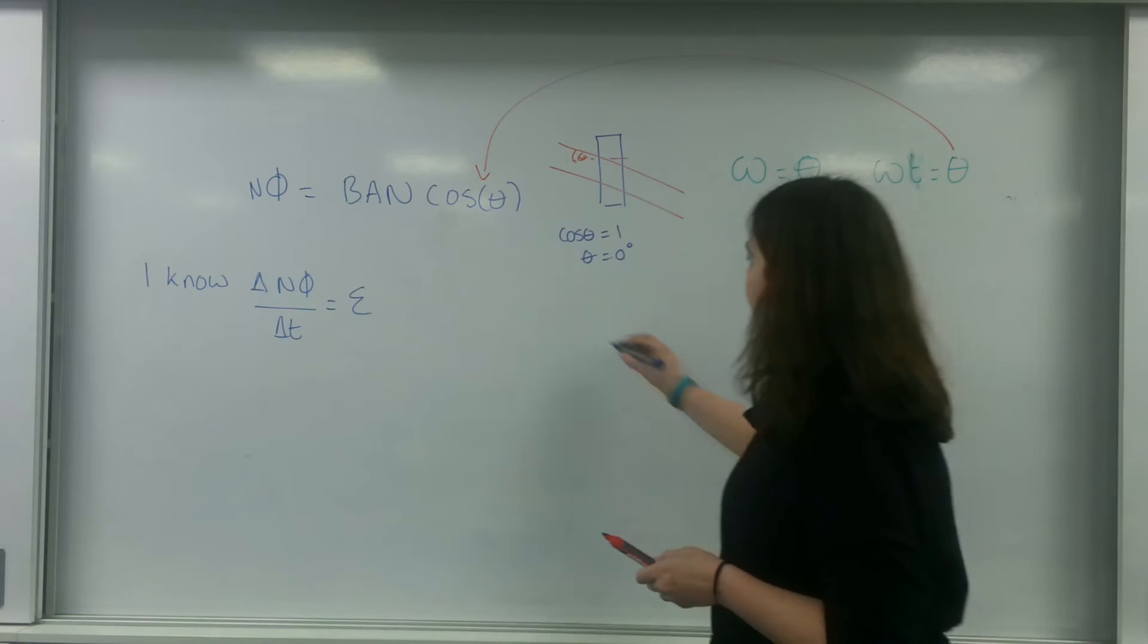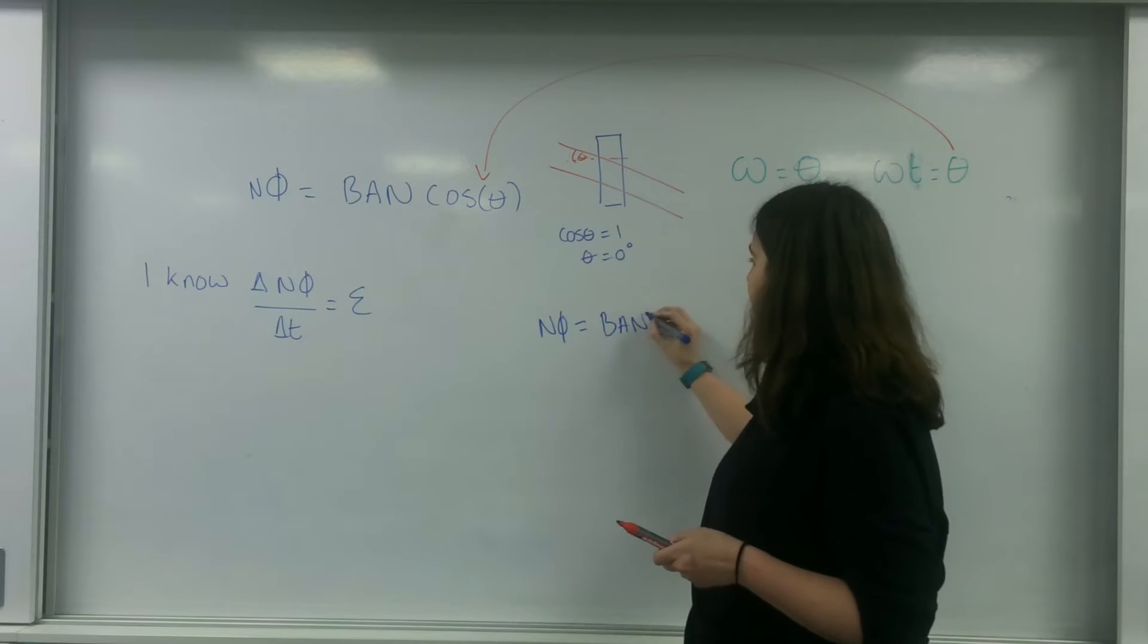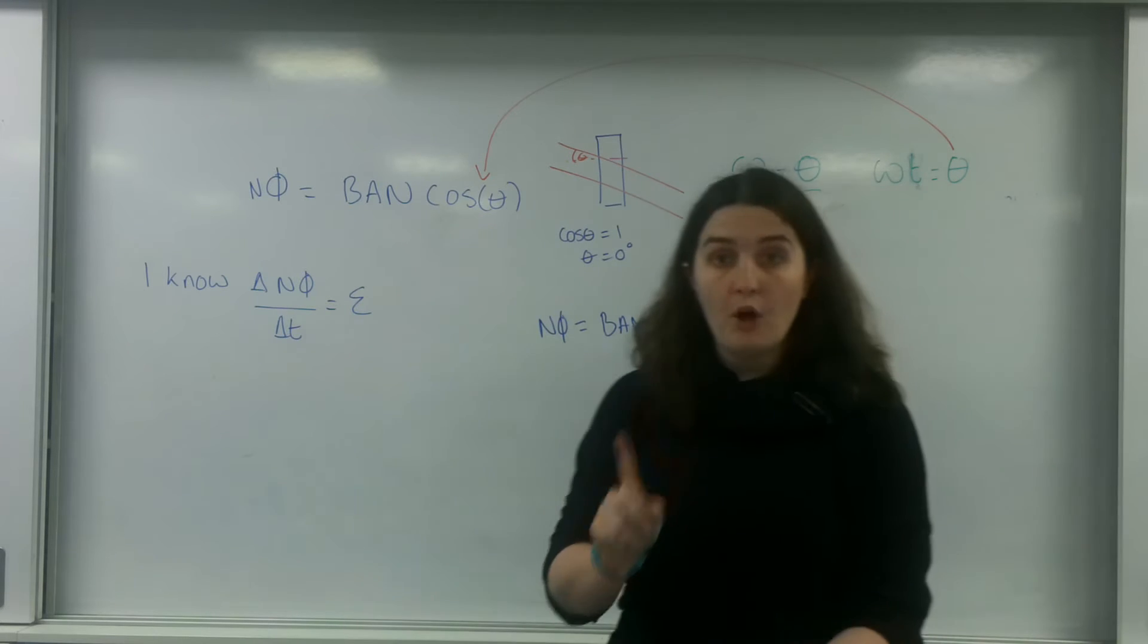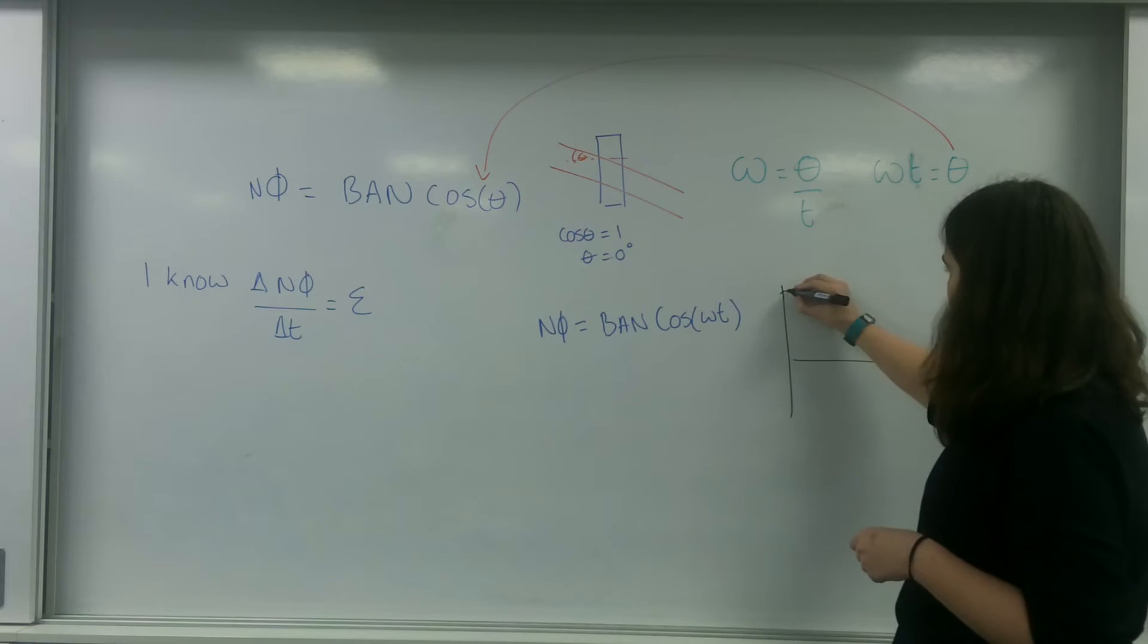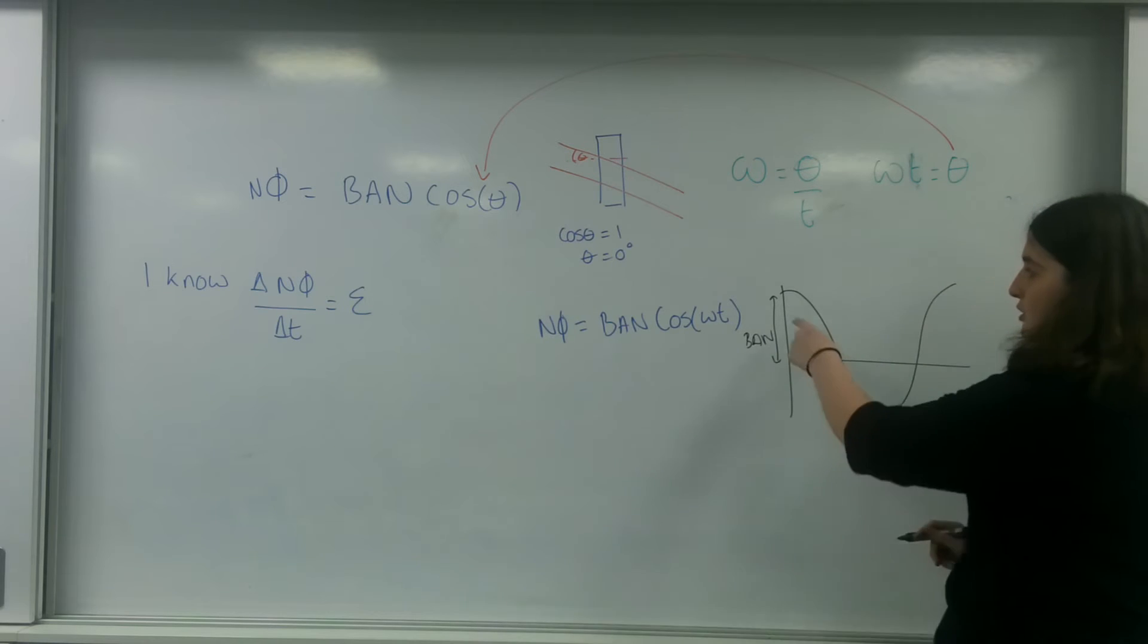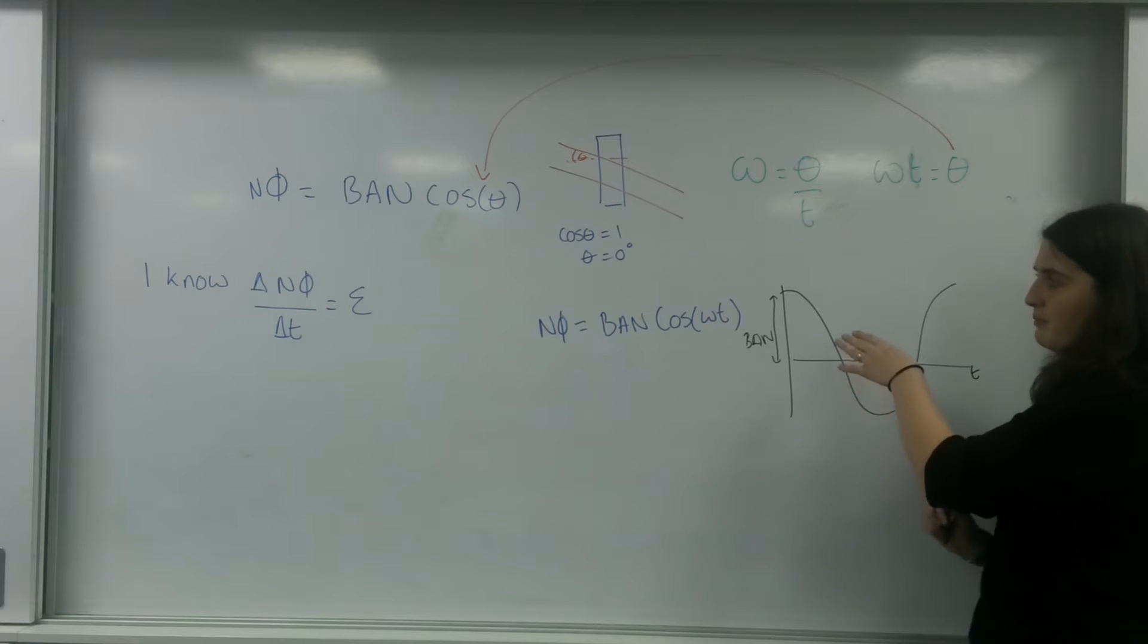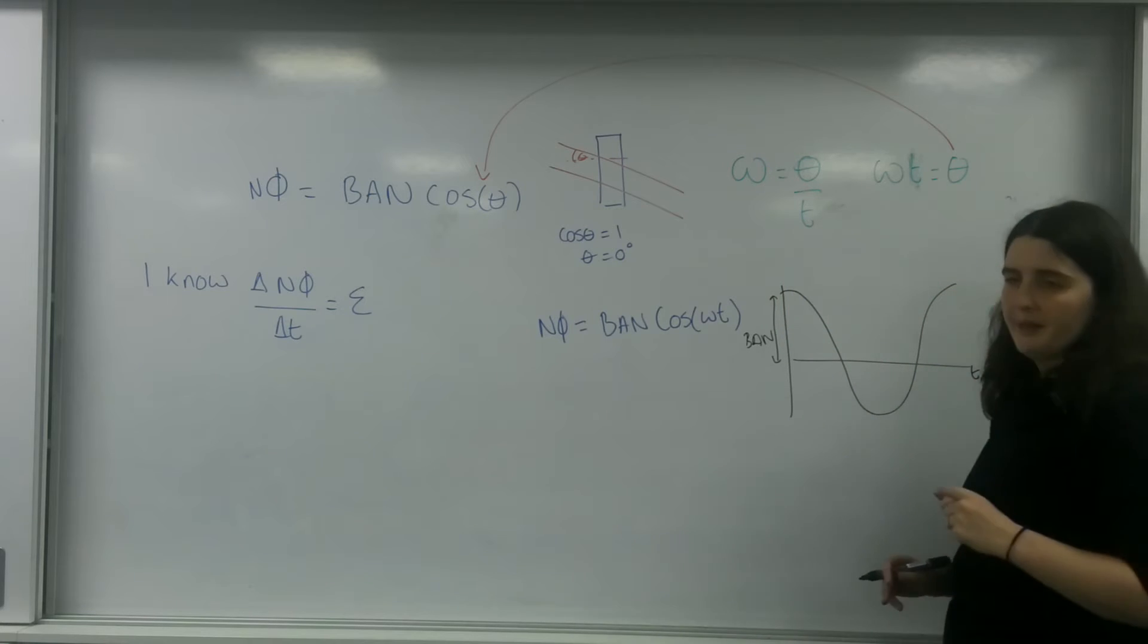And so I end up with my flux equals BAN cos omega T. If I was to plot this on a graph, it would look like this. It would be a cos graph like that, where this here is BAN. This is a cos and this would be a T graph here. So what I've done here is I've done my flux linkage over time. As you can see, it goes to peak, to trough, to peak.